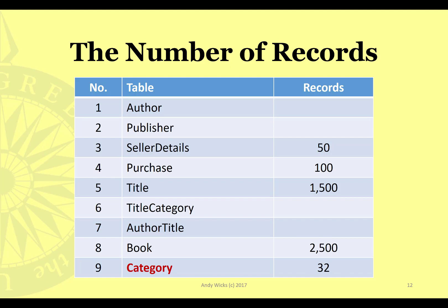The publisher details — how many publishers are there out there? I'm assuming 30 for the sake of this exercise. Next, we're going to look at title category. This is a function of both title and category, so obviously there's got to be more title category entries than titles. If there are 1,500 titles and 32 categories, let's assume that each book has two and a bit categories — something that's fiction might also be humour, something that's history may also be a novel.